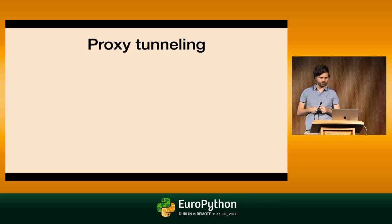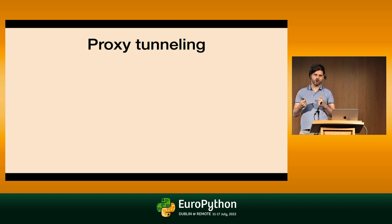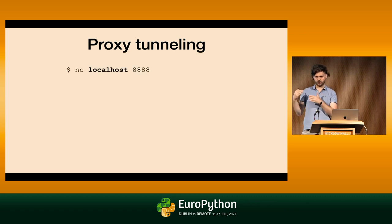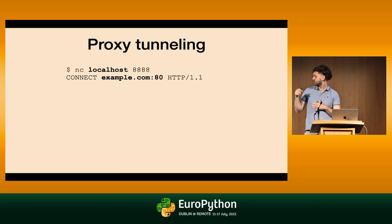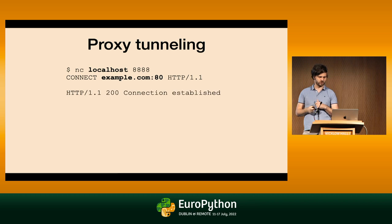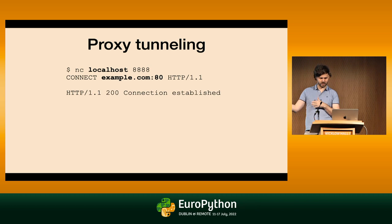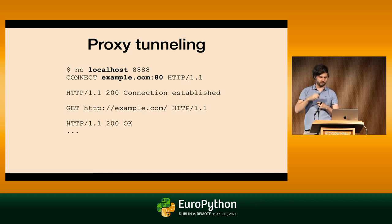To support encrypted traffic, proxies need a completely different mode of operation. This mode is called tunneling. In tunneling mode, I connect to the proxy as before, but I do not send my request. Instead, I ask the proxy to set up a tunnel — we have a special HTTP verb for that called CONNECT. When the proxy sets up the tunnel, it responds with 200 to indicate success. From now on, everything I send to the tunnel is being tunneled to the origin, and everything from the origin goes unmodified back to me.